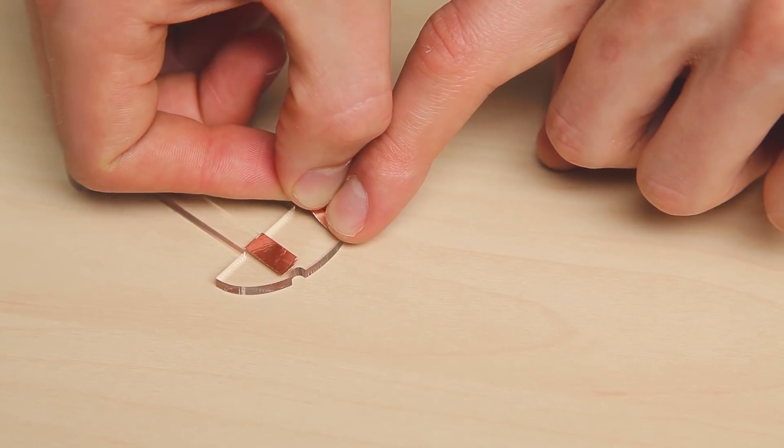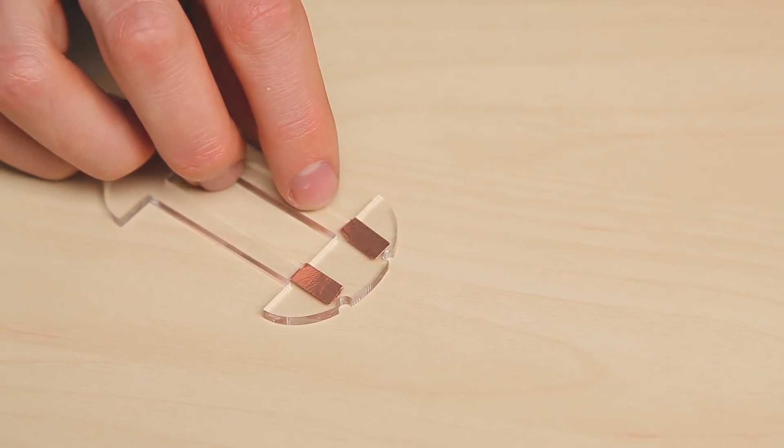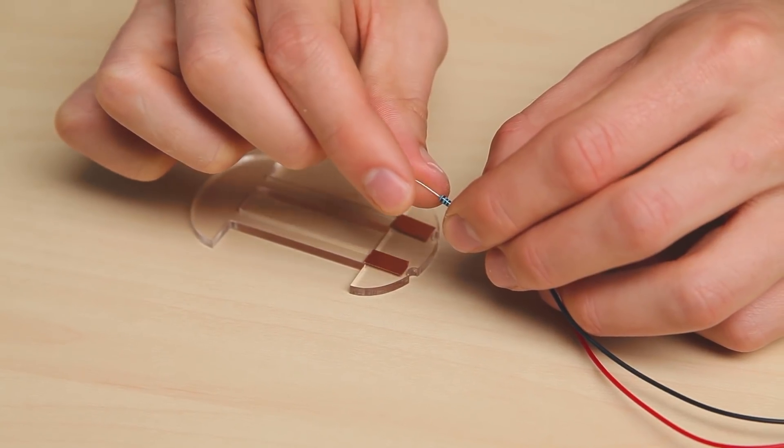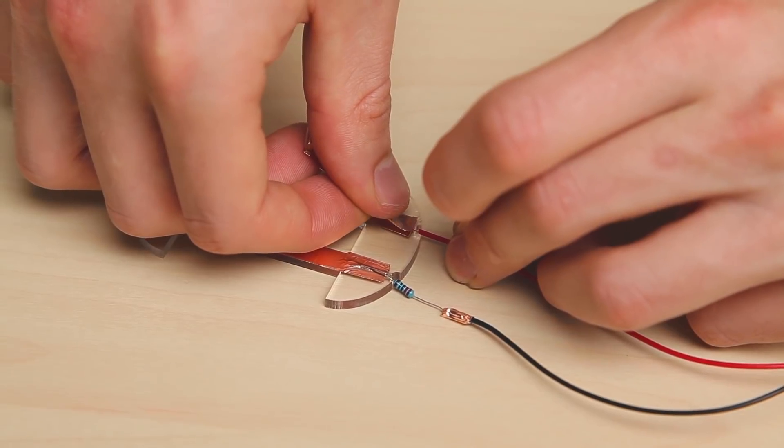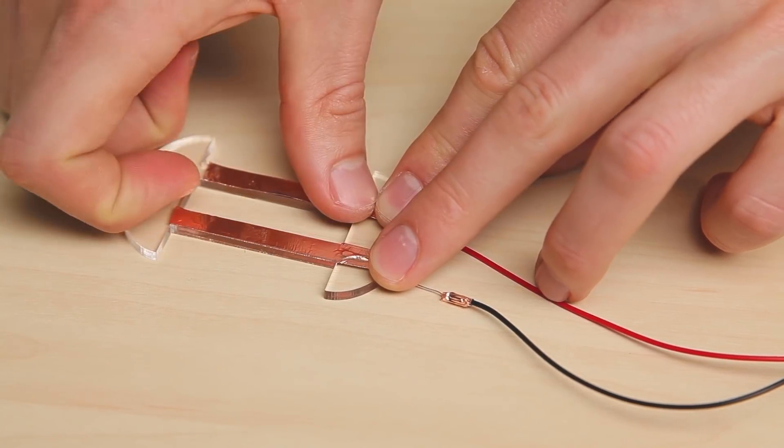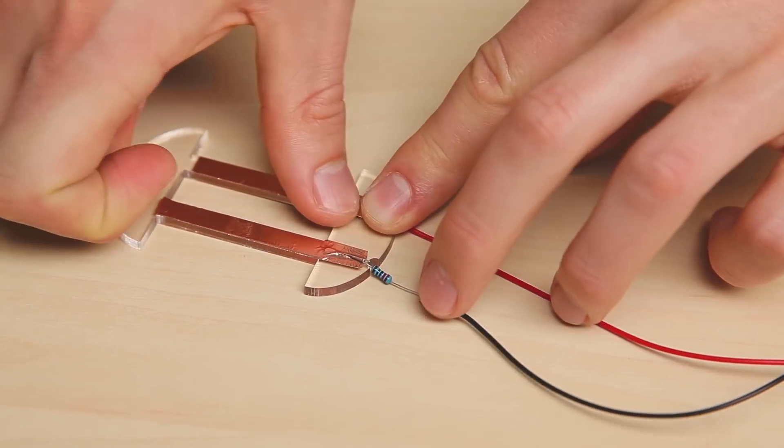Next stick two small pieces of copper tape to your acrylic base. Fold your free resistor end in half. Place the resistor end on one of the pieces of copper tape. Then tape it down with a longer piece of copper tape that extends to the end of the rail.